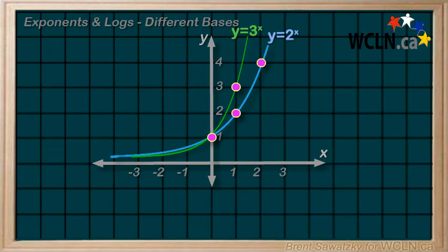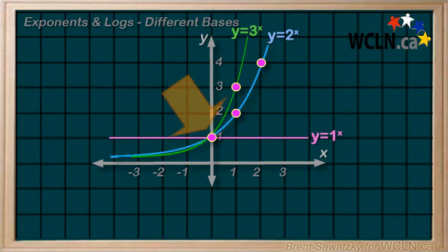So let's consider what happens if the base gets smaller. Well, if the base is 1, knowing that 1 to the anything is just 1. 1 times 1 is 1, 1 times 1 times 1 is 1, and so on. Our graph would just look like this. It has that same y-intercept, y equals 1, but it's just a flat line after that.